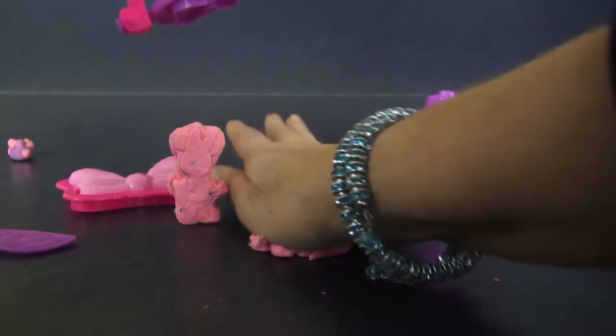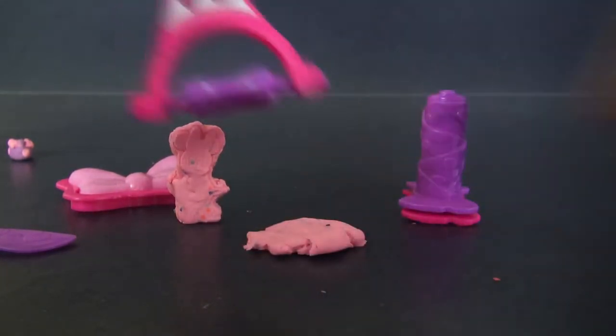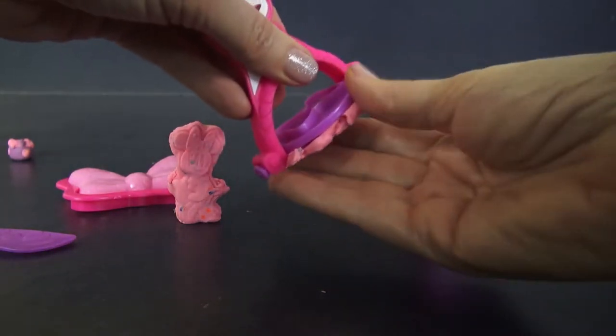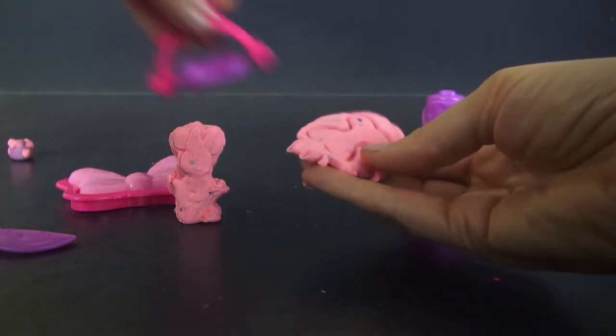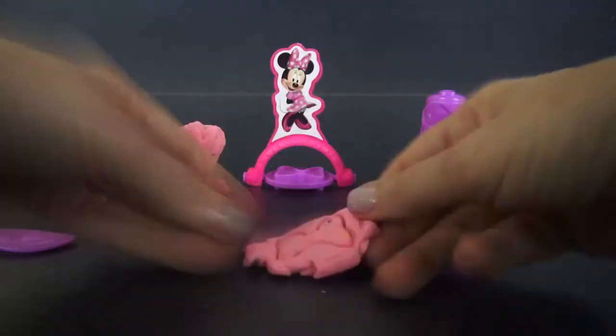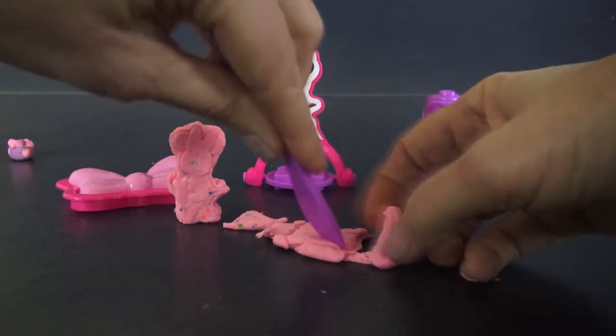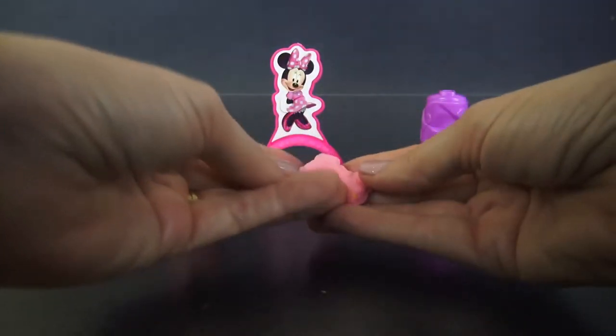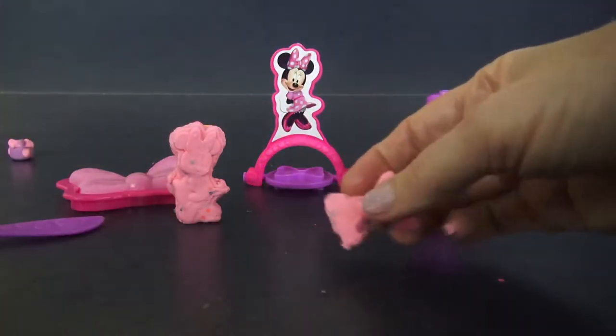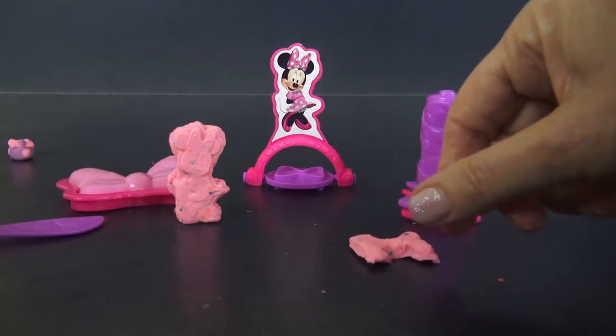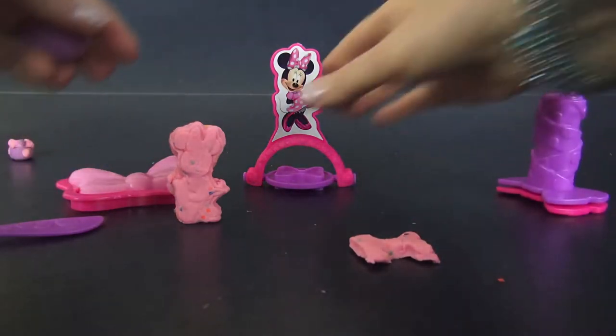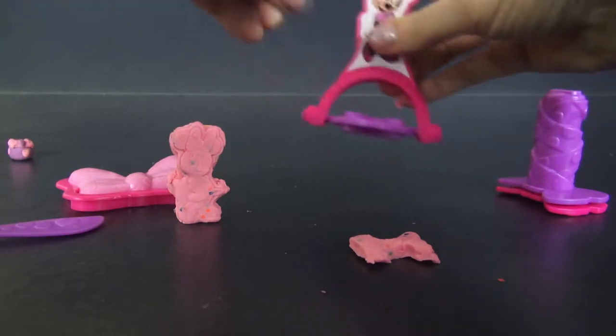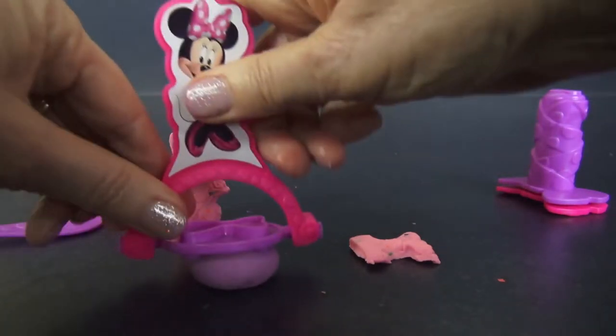So if we press that out and do that, there's one type of mold. See how pretty that is Minnie? And then if we turn the mold around, look at that, it just turns right around. We can make another bow.